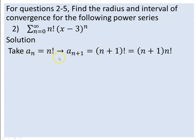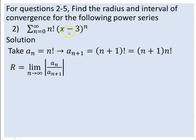R is obtained as the limit of the ratio of a_n to a_{n+1}. When we take this ratio, n factorial cancels, leaving 1 over (n+1). As n goes to infinity, this is obviously 0. So the radius of convergence R equals 0.